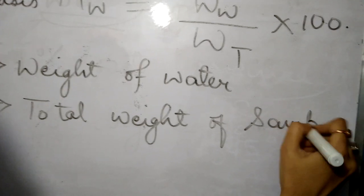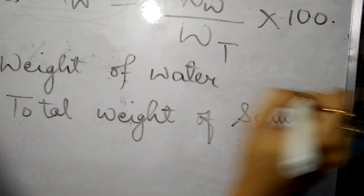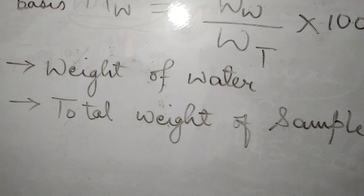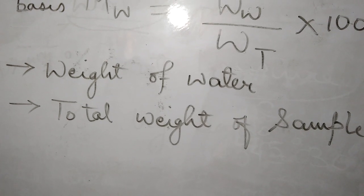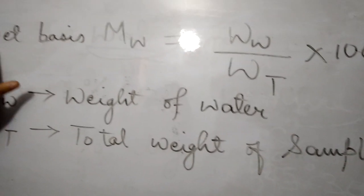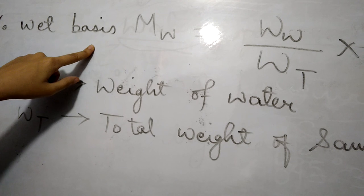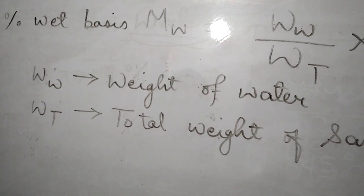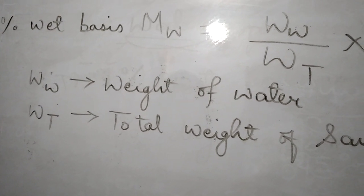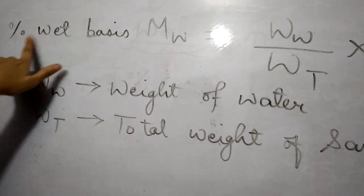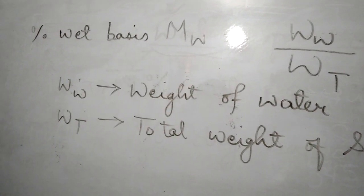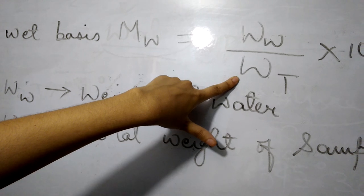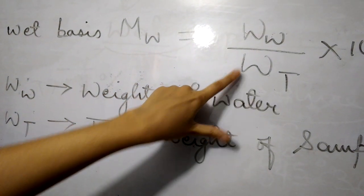One important point: if a question mentions moisture content without specifying the basis, you should consider it as wet basis by default. In percentage wet basis, the denominator we consider is the total weight of the sample — that is Wt.